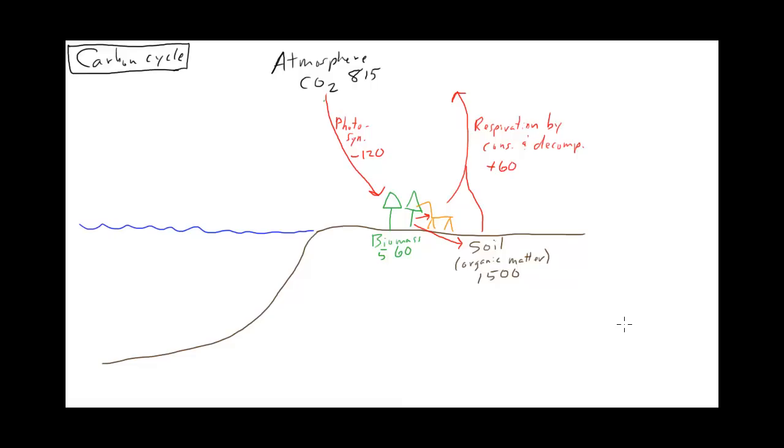And one thing that we're not looking at yet here is the fact that plants also do respiration when there's no light. And this accounts for the remaining 60 units, respiration by plants, plus 60. So look at these numbers: negative 120 plus 60 plus 60. This is a carbon neutral process.